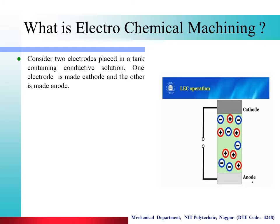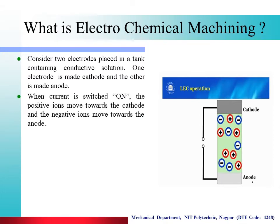Consider two electrodes placed in a tank containing a conductive solution. One electrode is made cathode and the other is made anode. As you can see in the figure, here there is a cathode and an anode placed in a conductive medium. When current is switched on, the positive ions move towards the cathode and the negative ions move towards the anode.